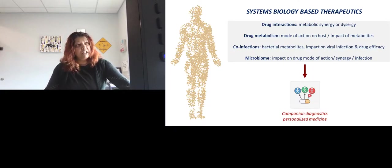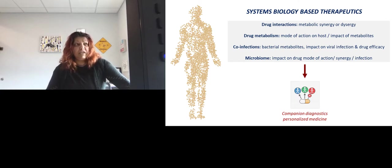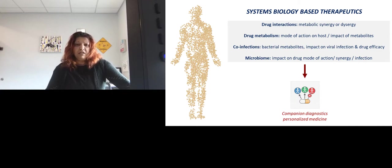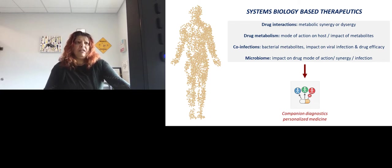We're interested in using systems biology-based therapeutics to look at drug interactions — whether drugs can be synergistic or dysergistic — drug metabolism, whether a drug gets broken down in the human body and whether those metabolites alter therapeutic efficacy or the infectious condition. We're also looking at what co-infections do, how bacterial metabolites might impact therapeutic efficacy, the microbiome's impact on drug mode of action, synergy, and infection. Ideally long-term, we are moving towards individualistic medicine — looking at a human's metabolic state and identifying what drug combinations might be useful — because not every drug or combination is ideal for everybody.